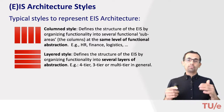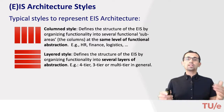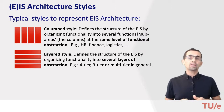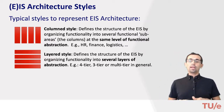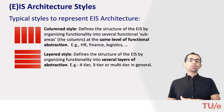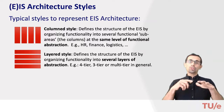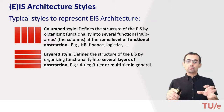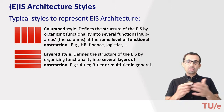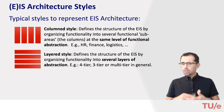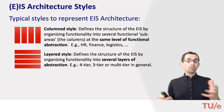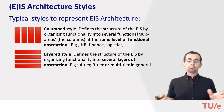In the layered style, that is a little bit different. The system functionality is structured into several layers of abstraction. In this course we'll mainly discuss the four-tier — sometimes also called three-tier — architecture, and we'll see about that in a later video. In the component-oriented style, the functionality is distributed to coherent components that have explicit interfaces.